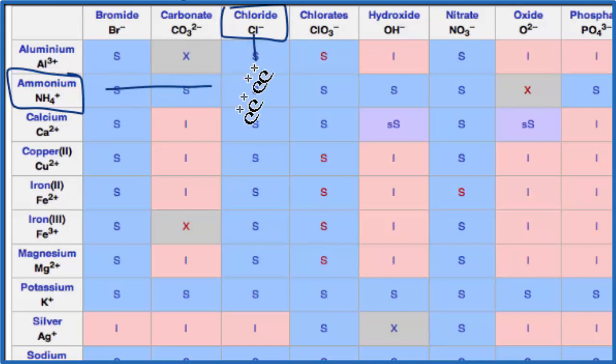So we go over and down, and you can see that ammonium chloride is going to be soluble in water. That means it'll split apart into its ions. It'll dissociate. We'll have NH4+ aqueous, and we'll have that Cl- aqueous as well. They're dissolved in water.